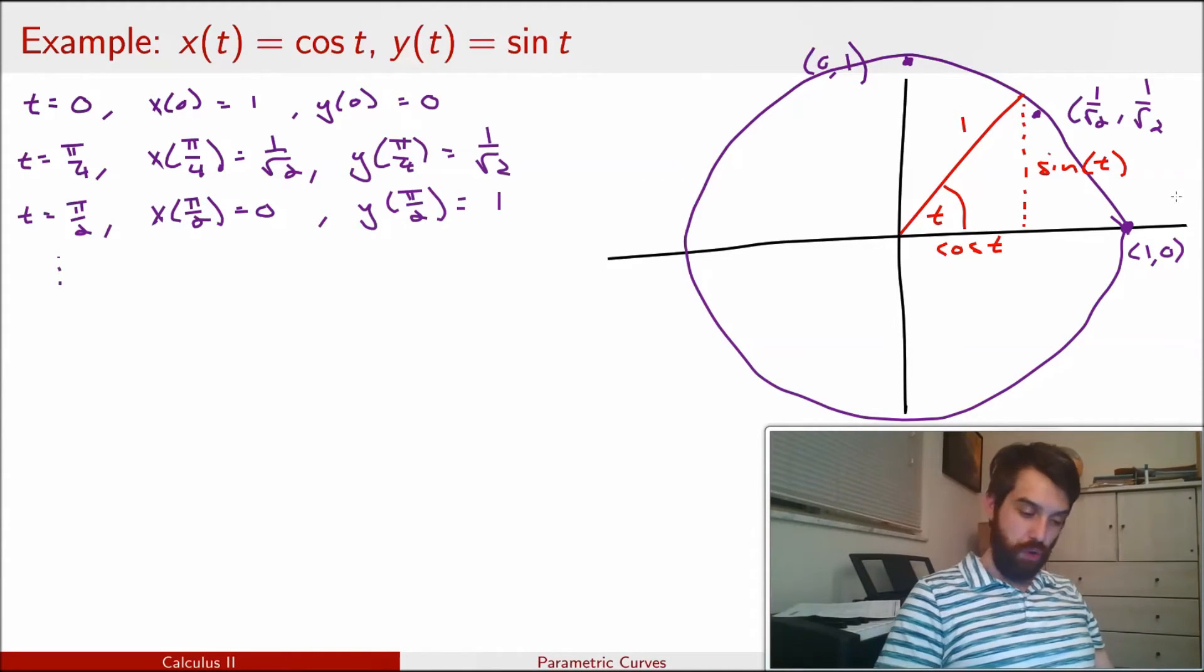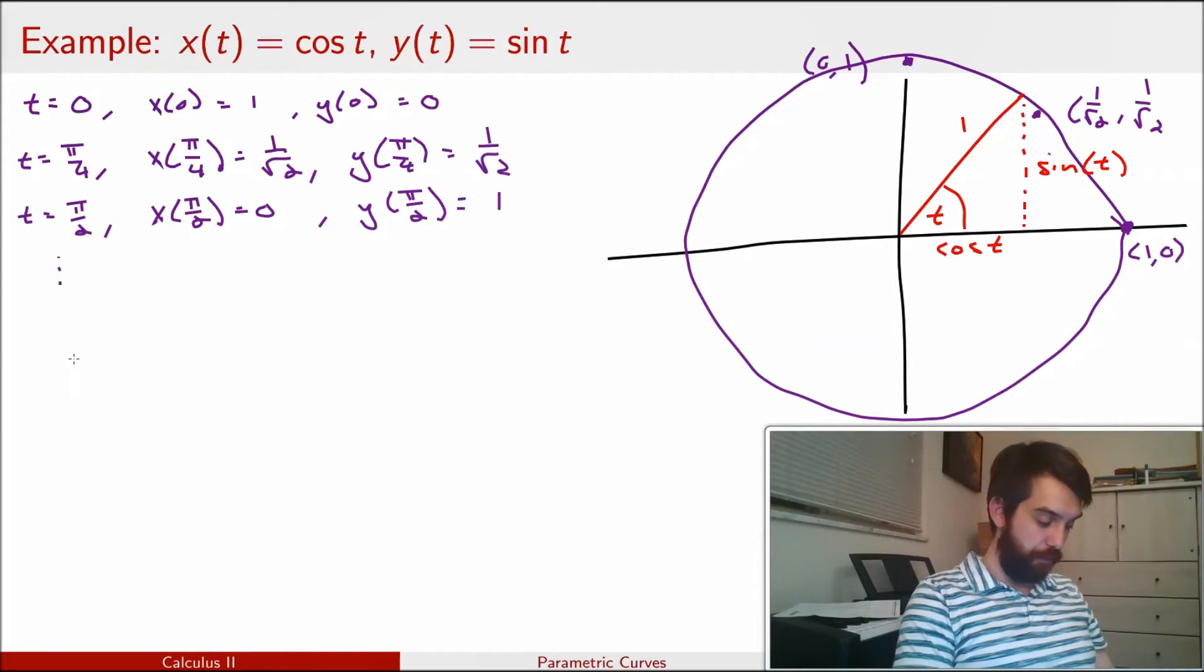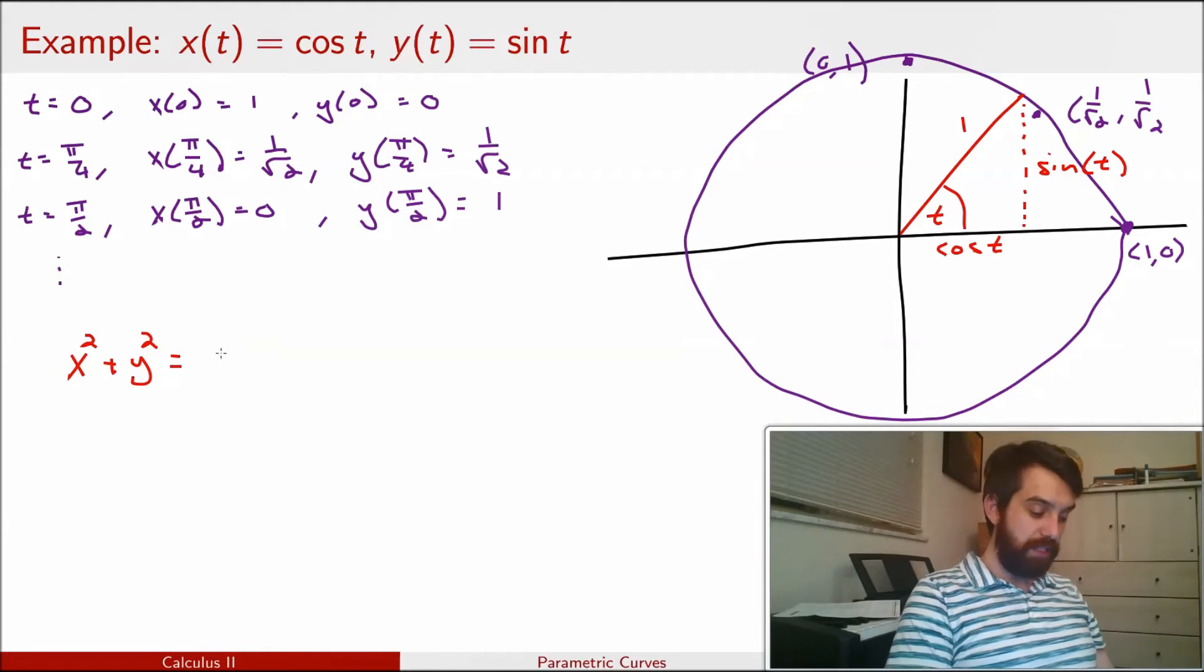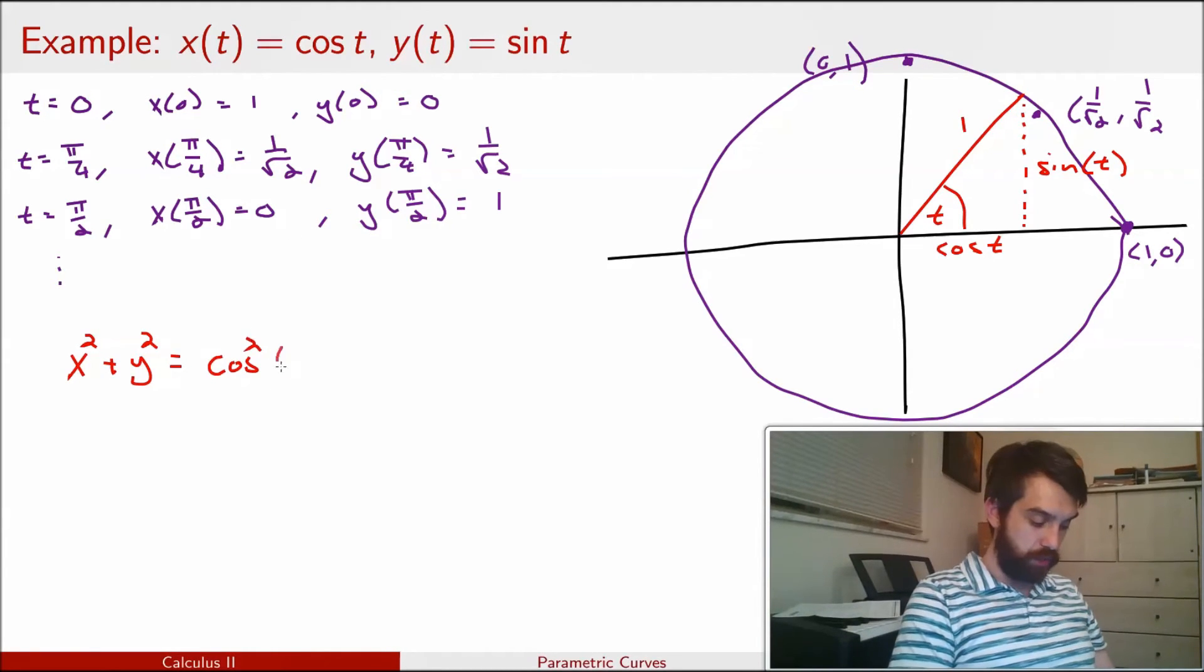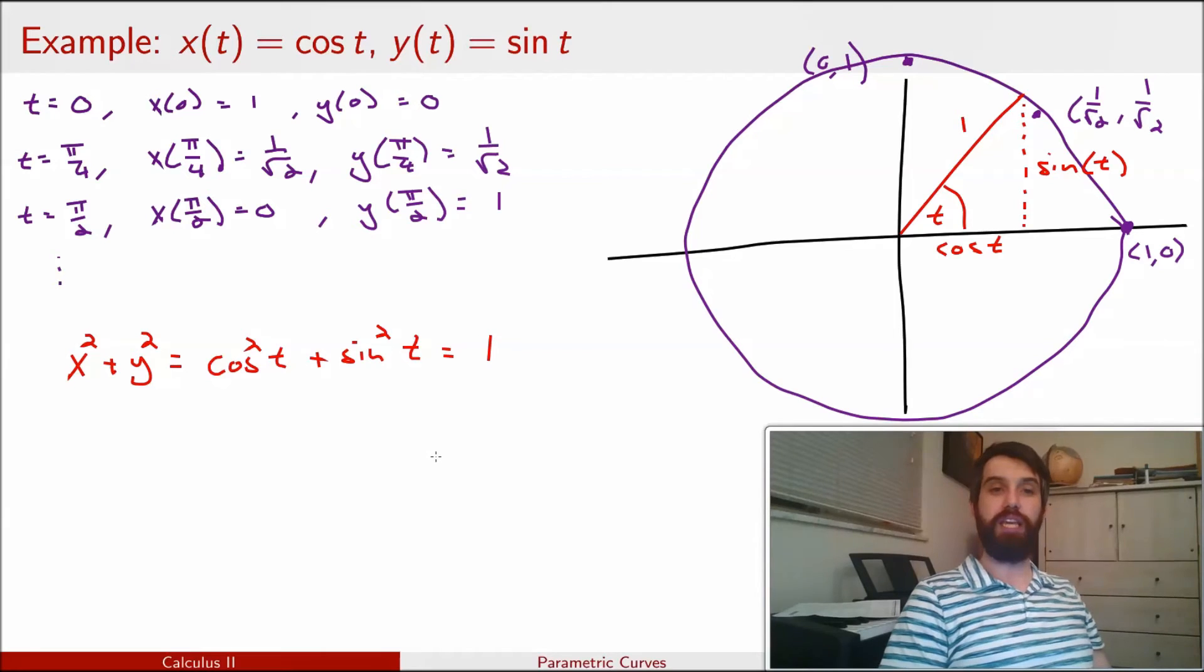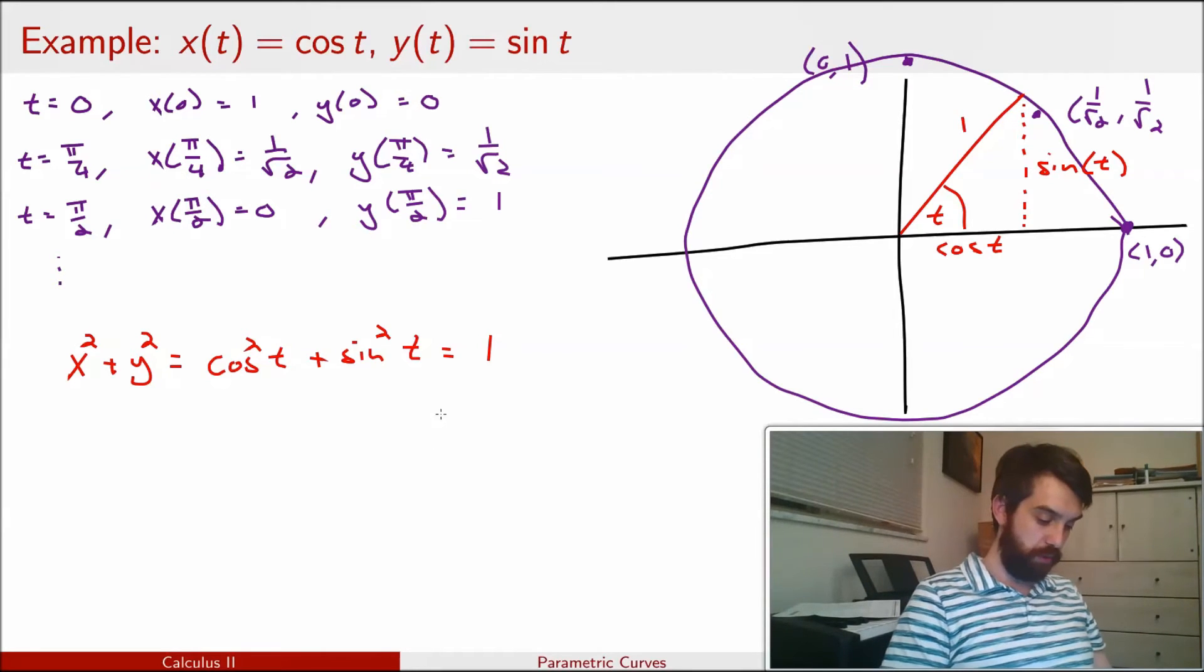We could also go back to our Pythagorean formulas. If I wanted to investigate what x squared plus y squared was going to be, well, x is cos, so this is cos squared of t, and y is sin, so sin squared of t, and we have this Pythagorean identity, indeed it was demonstrated for this precise reason, to be precisely 1.